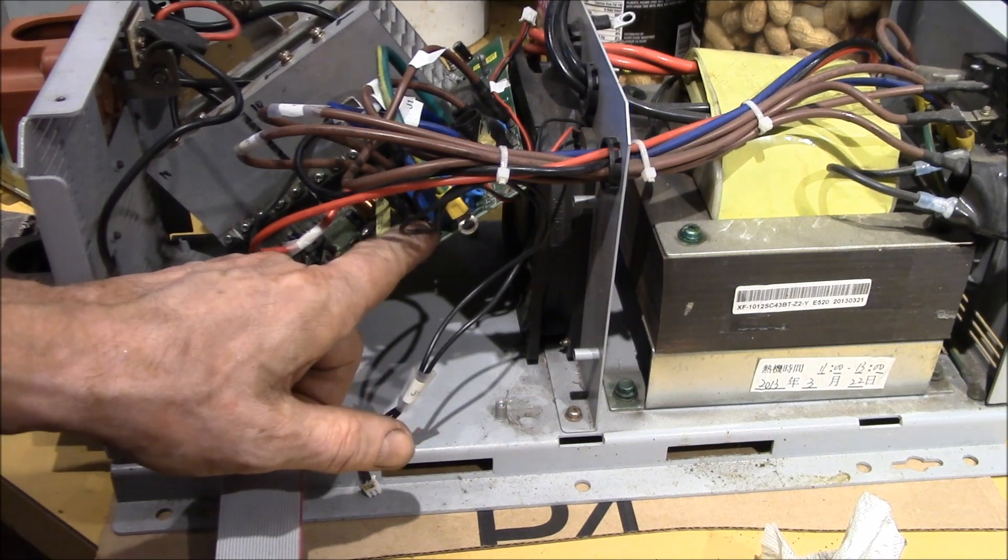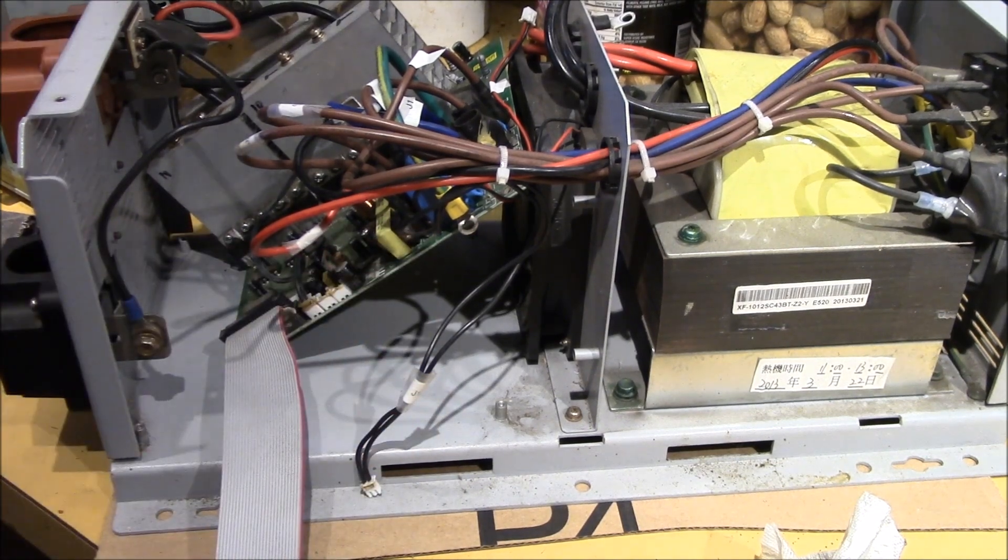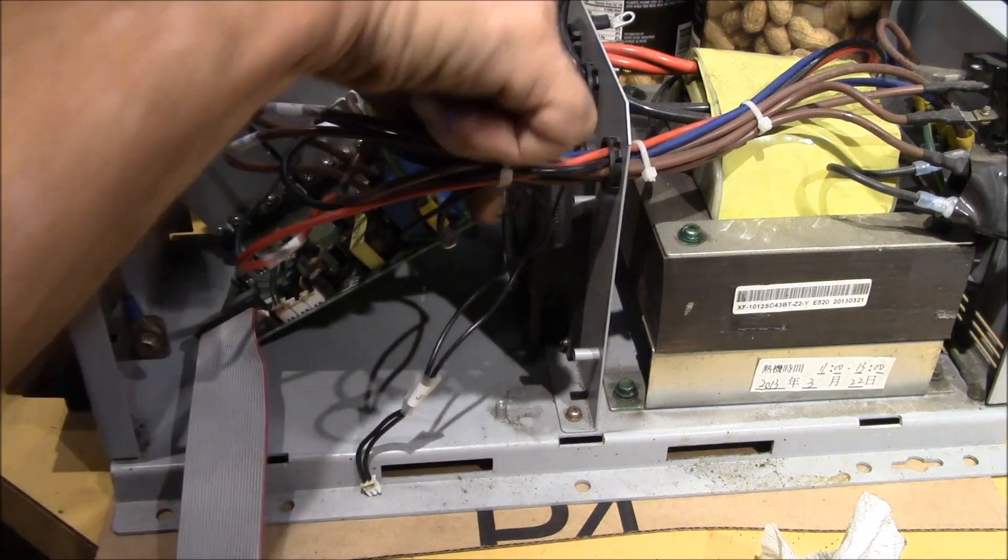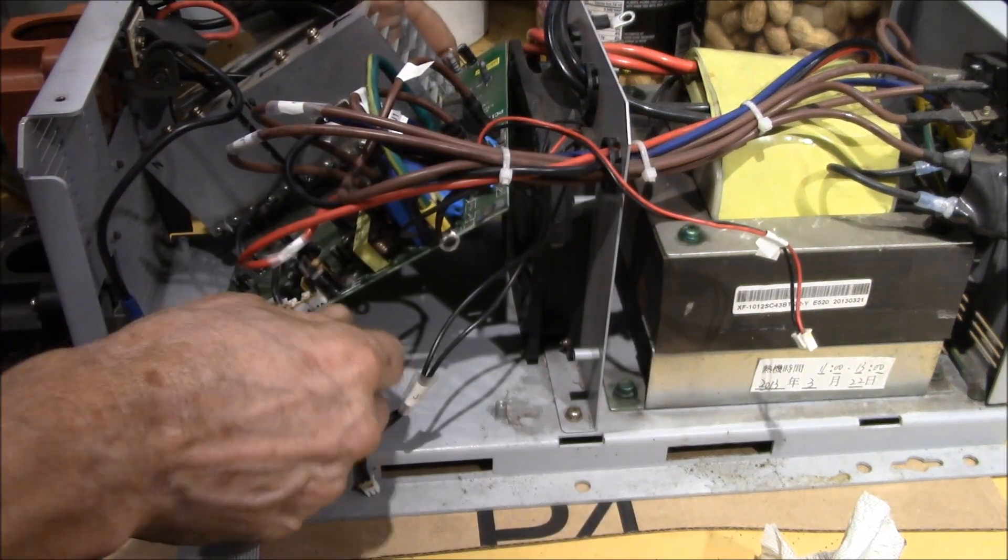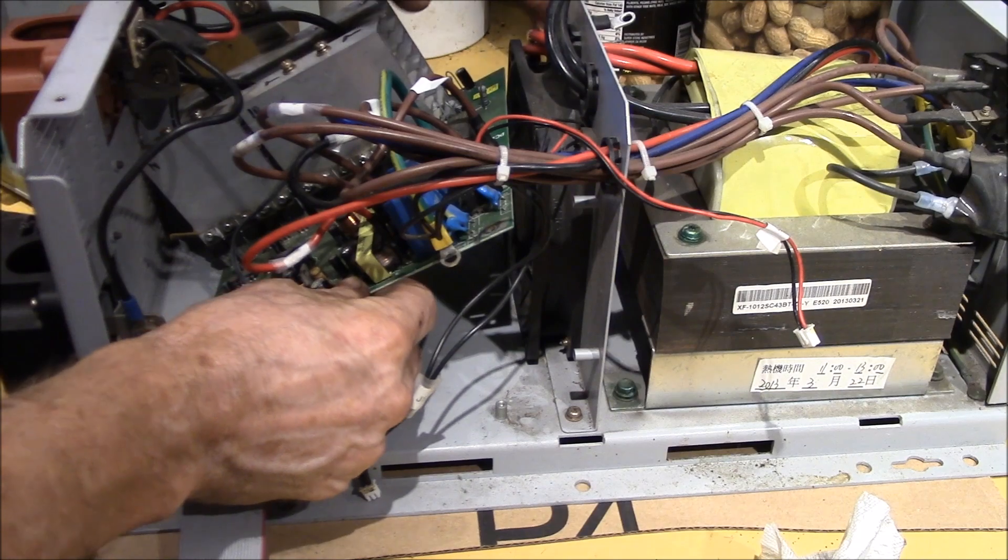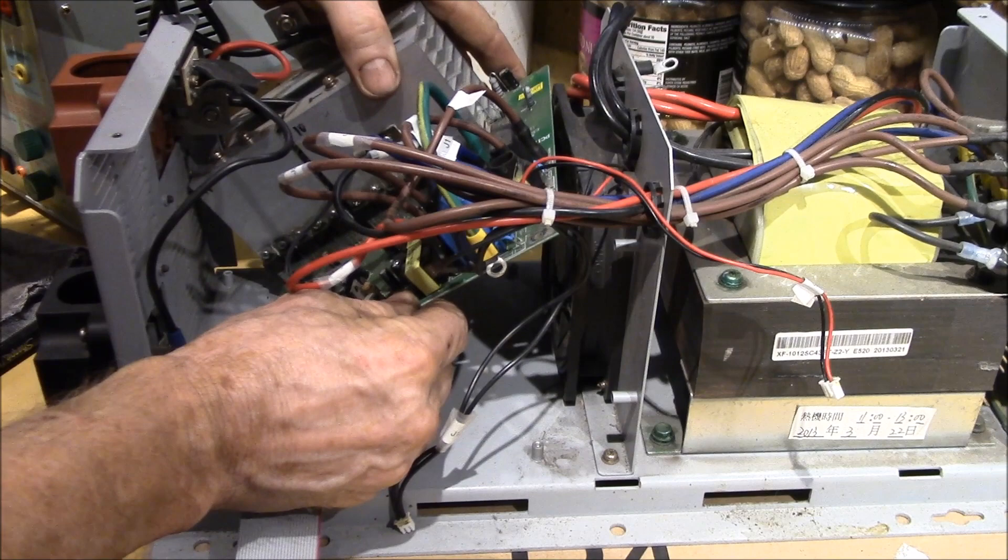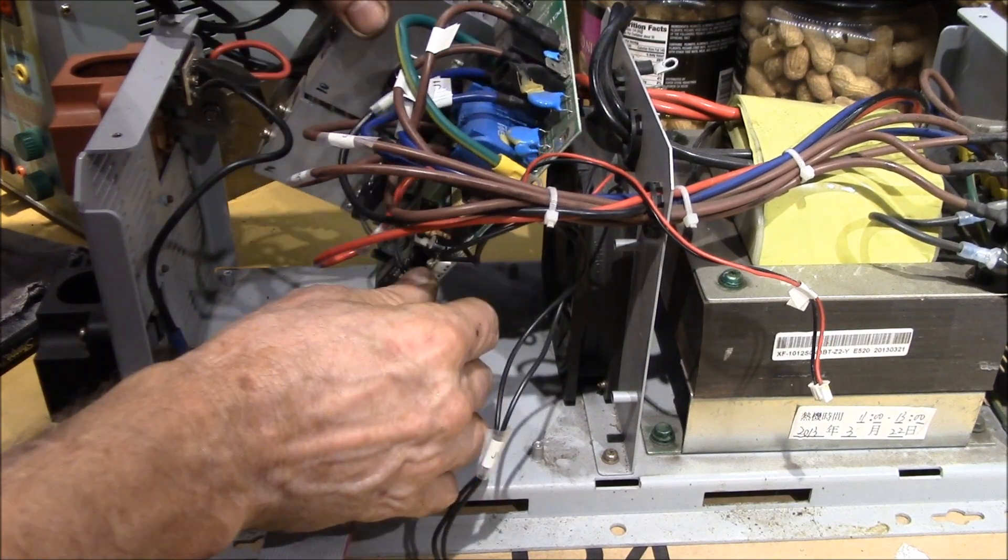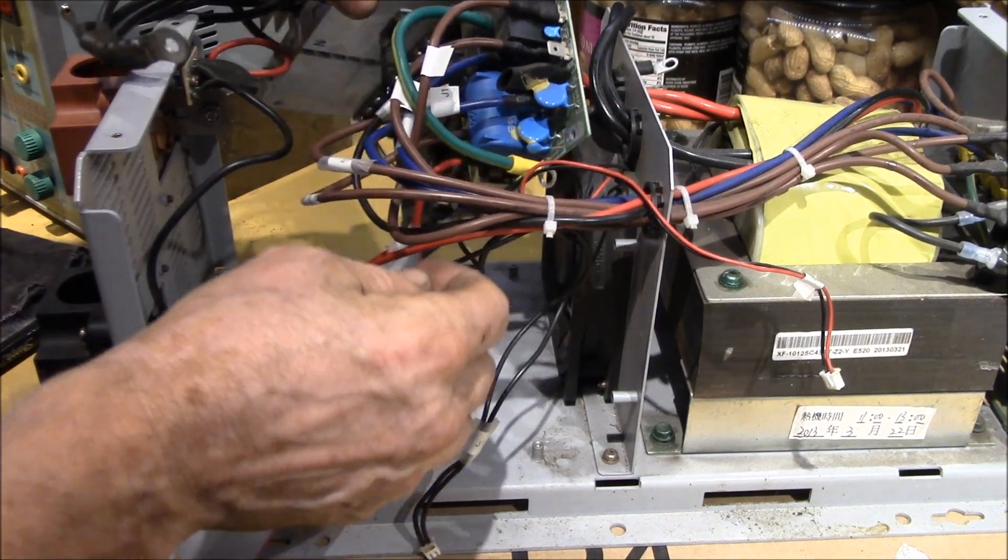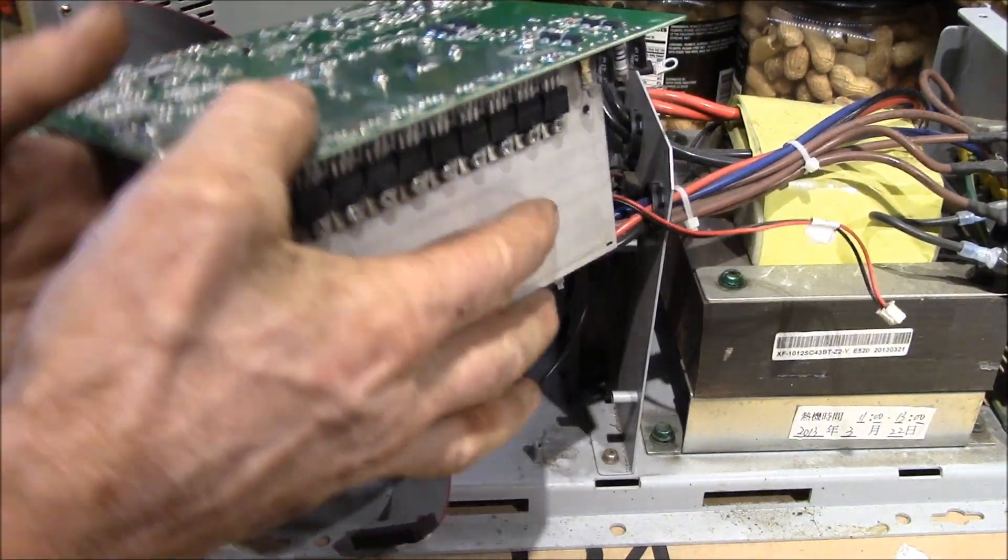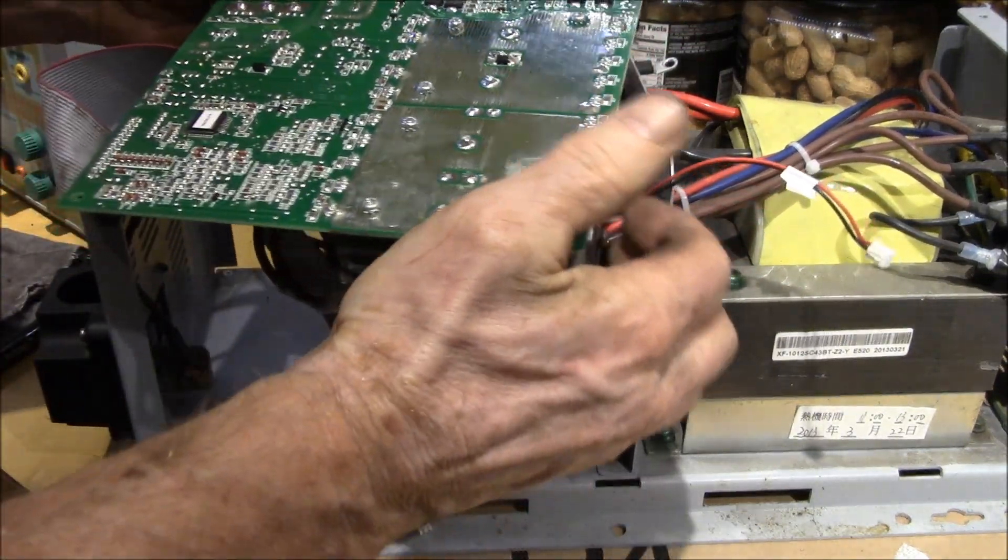You can't really get any access to these terminals, so it turns out if you just kind of lift this up here and keep those little wires out of the way and get these transformer wires out of the way, you can just get that out past the fan and then flip it over. There's the bottom side of the board.